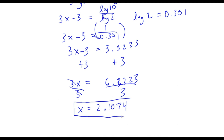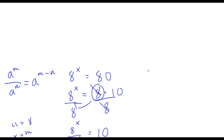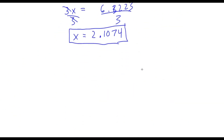So x is approximately 2.1074. Our original equation was 8 to the power of x equals 80, so plugging in 2.104, we get 8 to the power of 2.104, and it is indeed approximately equal to 80. It's not the exact value because we used an approximation.